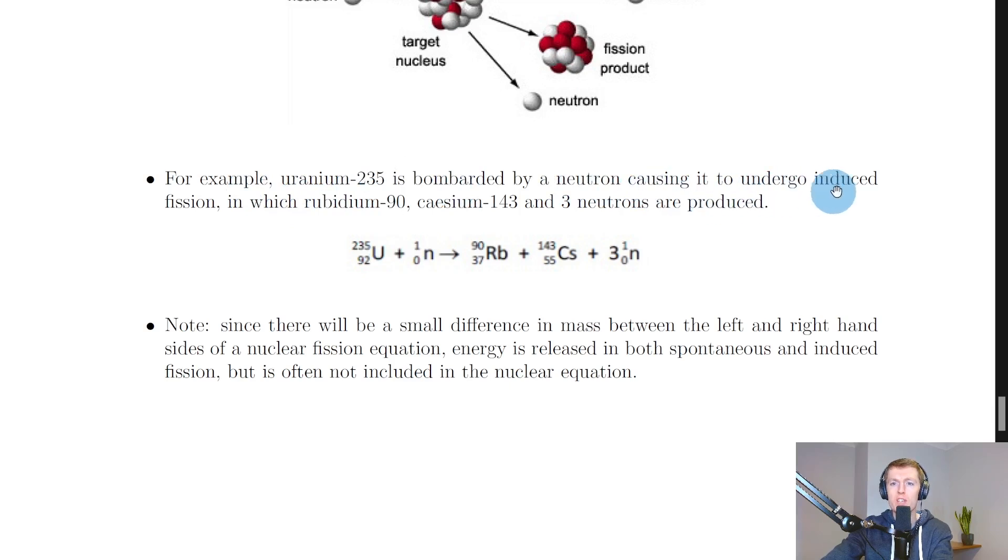So for example, uranium-235 is bombarded by a neutron causing it to undergo induced fission in which rubidium-90, cesium-143, and three neutrons are produced. So here we know it's induced fission because we've got the uranium plus a neutron on the left-hand side, which is what we didn't have for the spontaneous fission. And you'll see then we've got our three neutrons, which again is an indicator of fission taking place, and we've got our two fission fragments there.